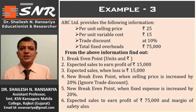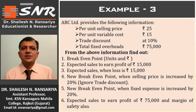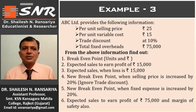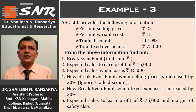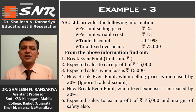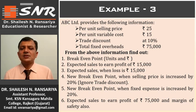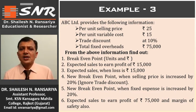ABC Limited provides the following information. Per unit selling price: Rs. 25. Per unit variable cost: Rs. 15. Trade discount: 10%. Total fixed overhead: Rs. 75,000. From the above information, find out: first, breakeven point in units and in rupees; second, expected sales to earn profit of Rs. 15,000; third, expected sales when loss is Rs. 15,000; fourth, new breakeven point when selling price is increased by 20% and ignore trade discount; fifth, new breakeven point when fixed expenses is increased by 20%; and last, expected sales to earn profit of Rs. 75,000 and also margin of safety.